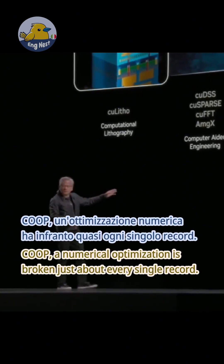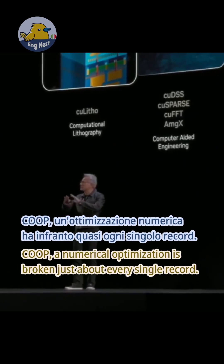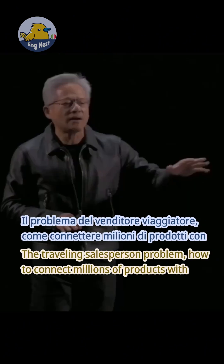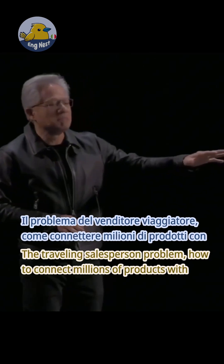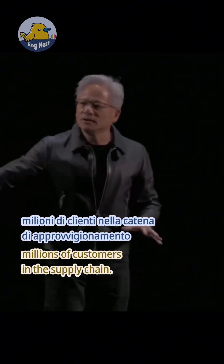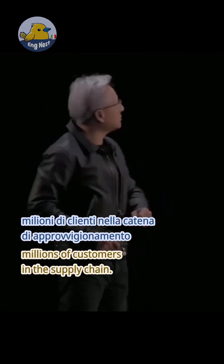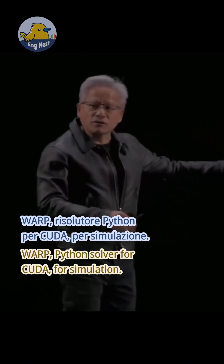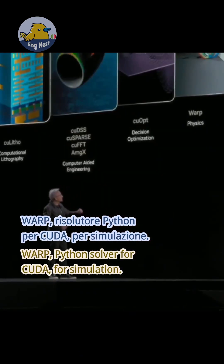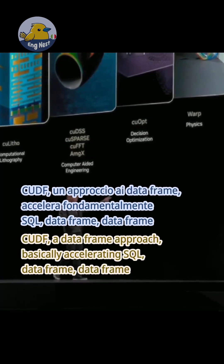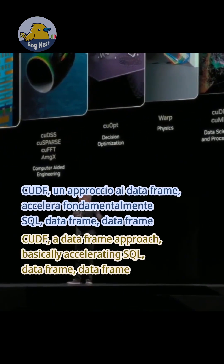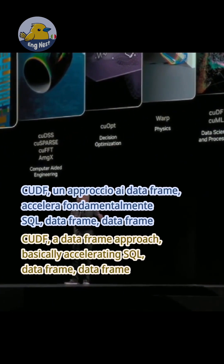cuOpt, a numerical optimization library, has broken just about every single record — the traveling salesperson problem, how to connect millions of products with millions of customers in the supply chain. cuSolver, a Python solver for CUDA for simulation.